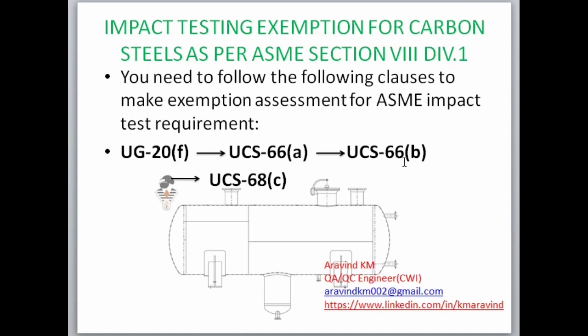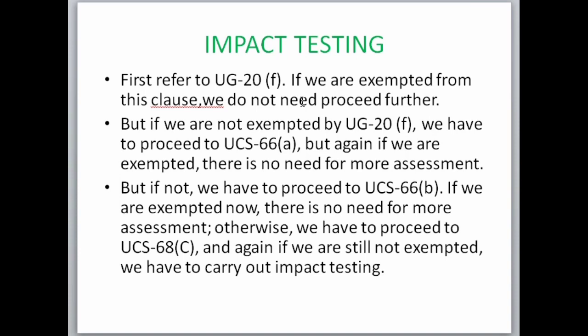In order to make an assessment, we have to go through the clauses UG20F, UCS66A, UCS66B, and UCS68C. First, refer to UG20F — if we are exempted by this clause, we do not need to proceed further. If not, we proceed to UCS66A, then UCS66B. If exempted by UCS66B, no further assessment is needed; otherwise, we proceed to UCS68C. If still not exempted, we must carry out impact testing.